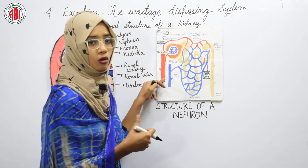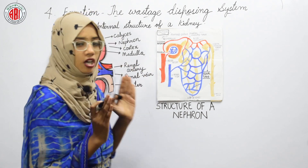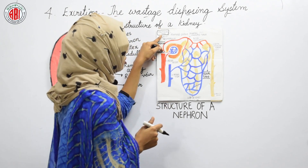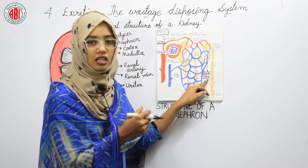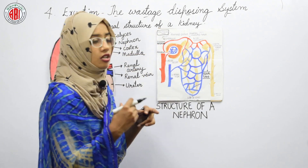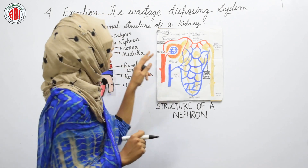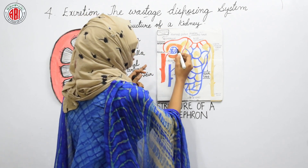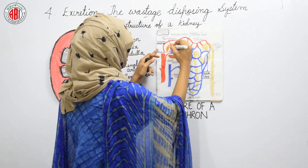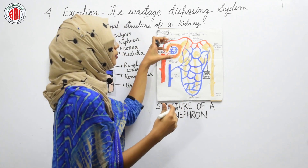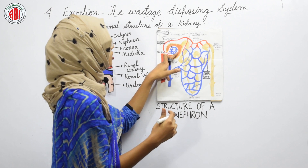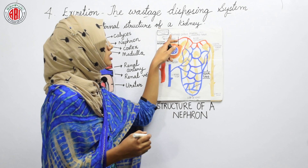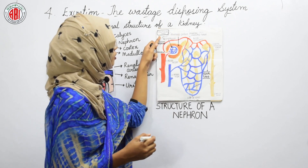Let us talk about the parts of a nephron. The structure of a nephron consists of two major parts: the first one is the Malpighian body and the second one is the renal tubule. The Malpighian body shows two main parts: the glomerulus and Bowman's capsule. This head-like structure is called the glomerulus, and around it a cap-like structure called Bowman's capsule is present. Together they form the Malpighian body.